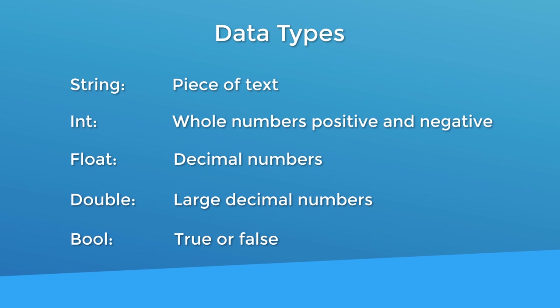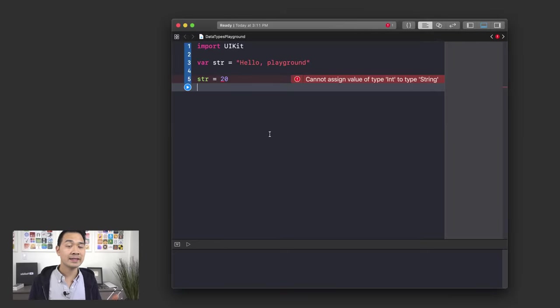Int is for integers — these represent whole numbers, positive and negative. Then you have decimal numbers, and you actually have two data types: Float and Double. The only difference is that Double is more precise, so it can store longer decimal numbers. Lastly, there is Boolean, or just Bool, which represents true or false data — it's perfect for data where there are only one of two options. Those aren't the only data types in Swift, but they're probably the most common ones you'll work with for a while.